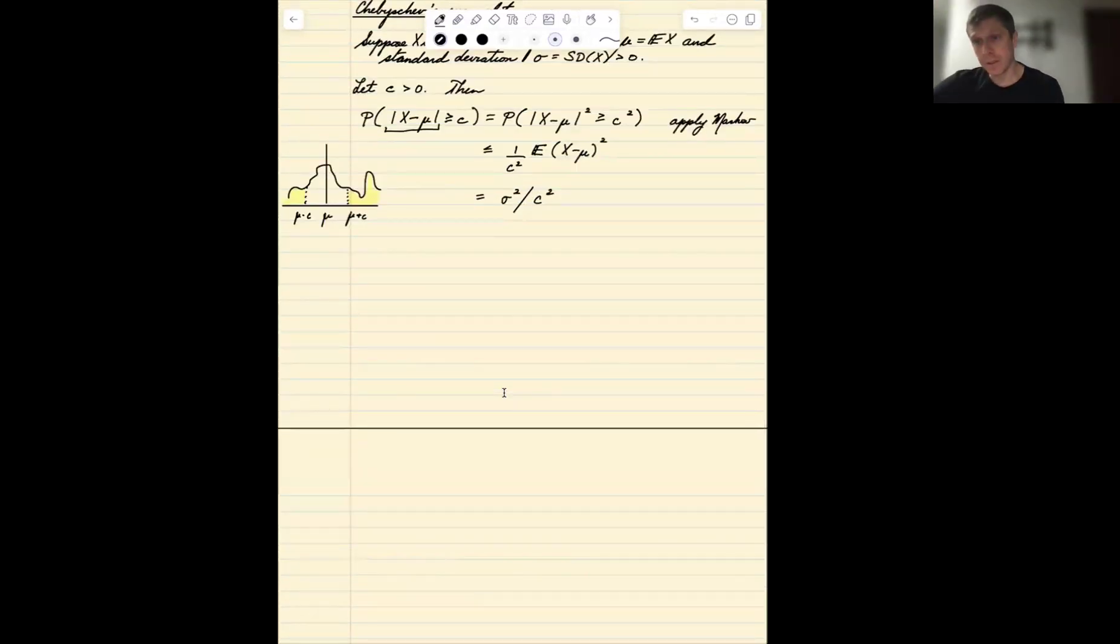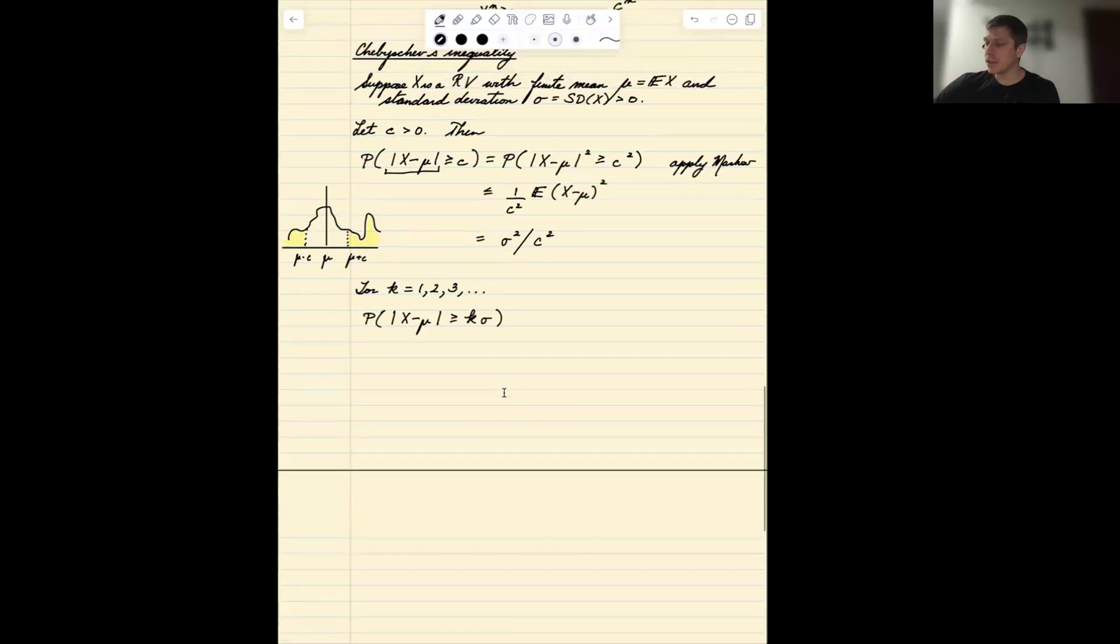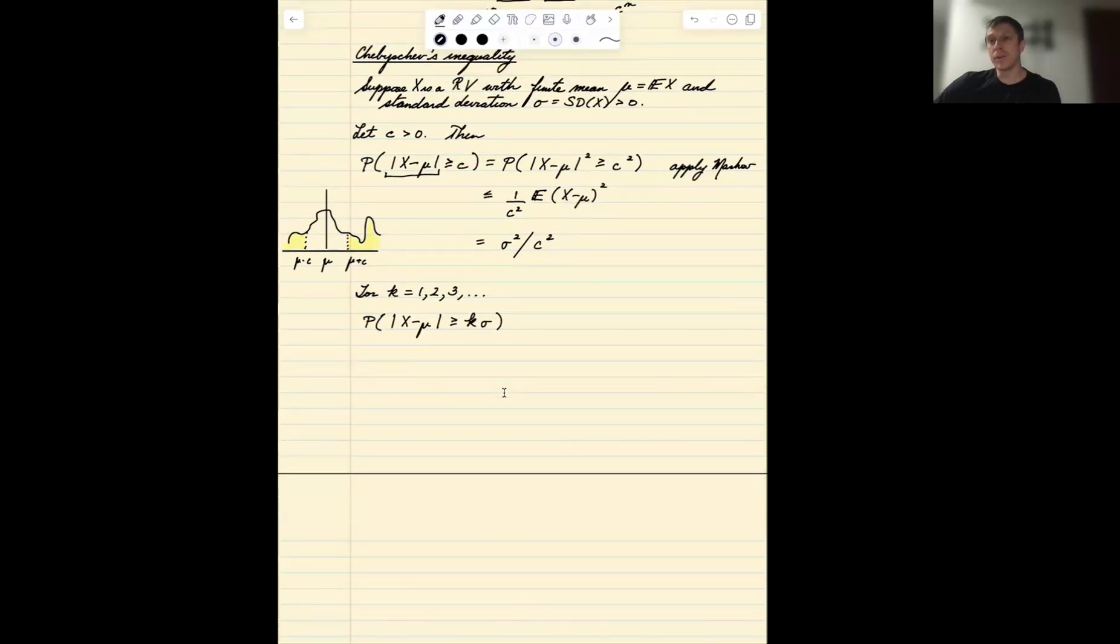So that's Chebyshev's inequality. And a specific application of Chebyshev's inequality then is that if I take an integer value k to be some positive integer, let's ask: what's the probability that x minus mu is bigger than or equal to k times sigma? Sigma being the standard deviation. So now what I'm asking is: what's the probability that x deviates from its mean by more than k standard deviations?